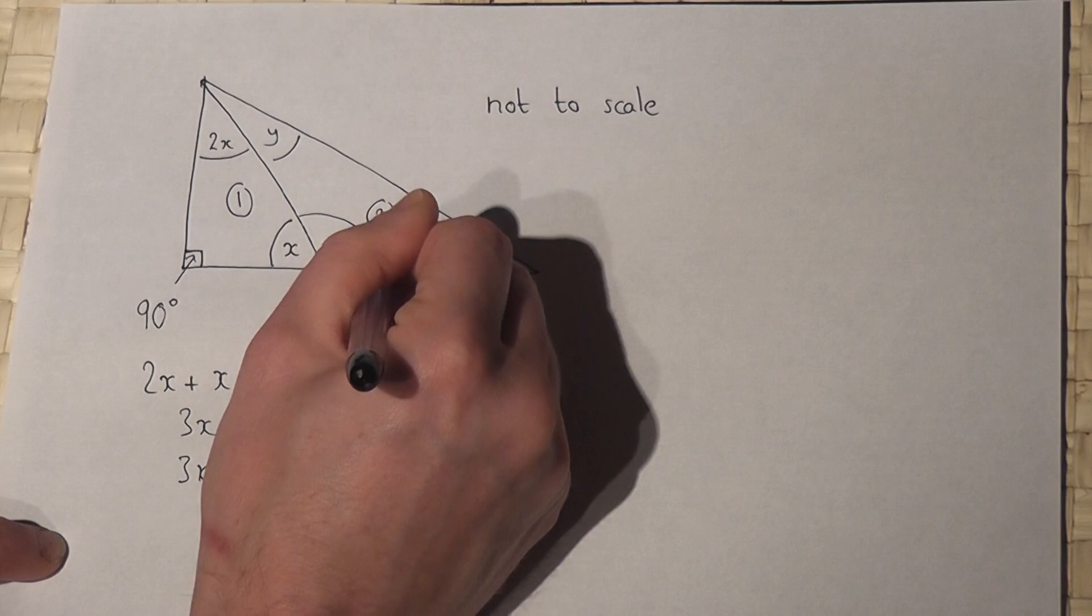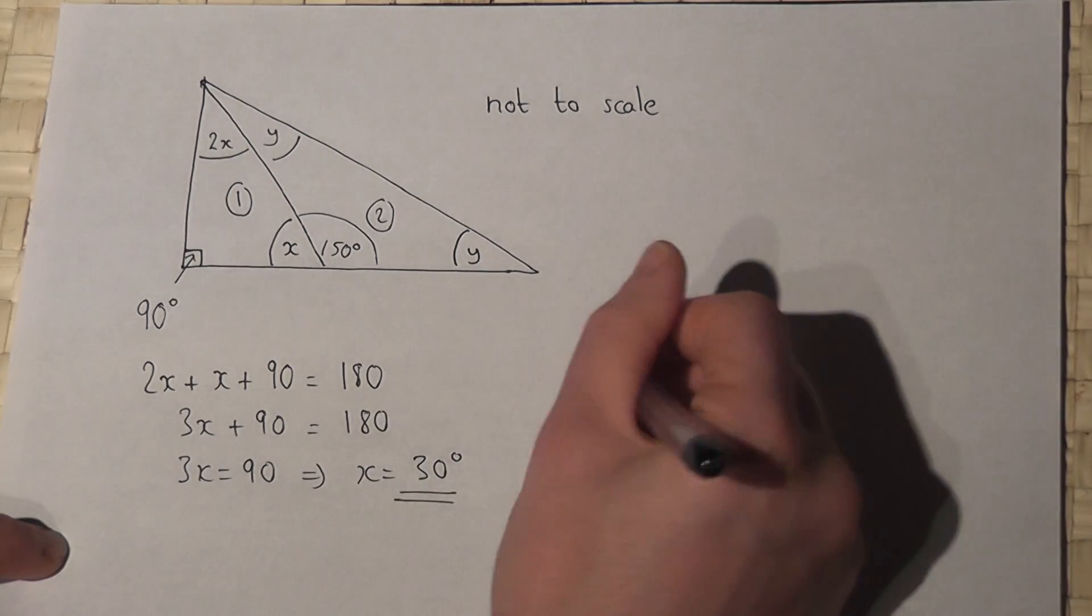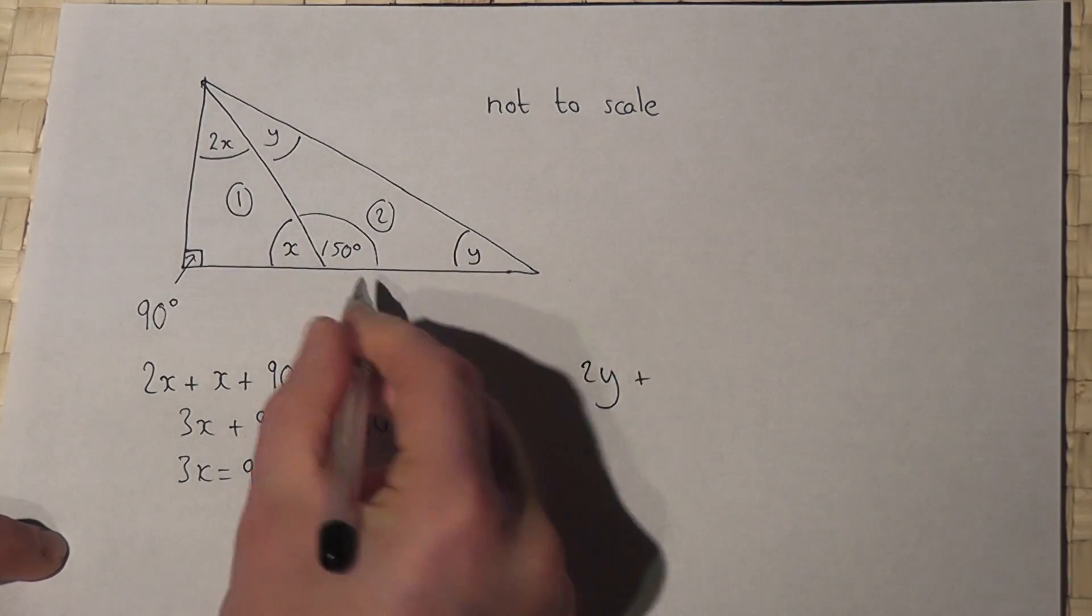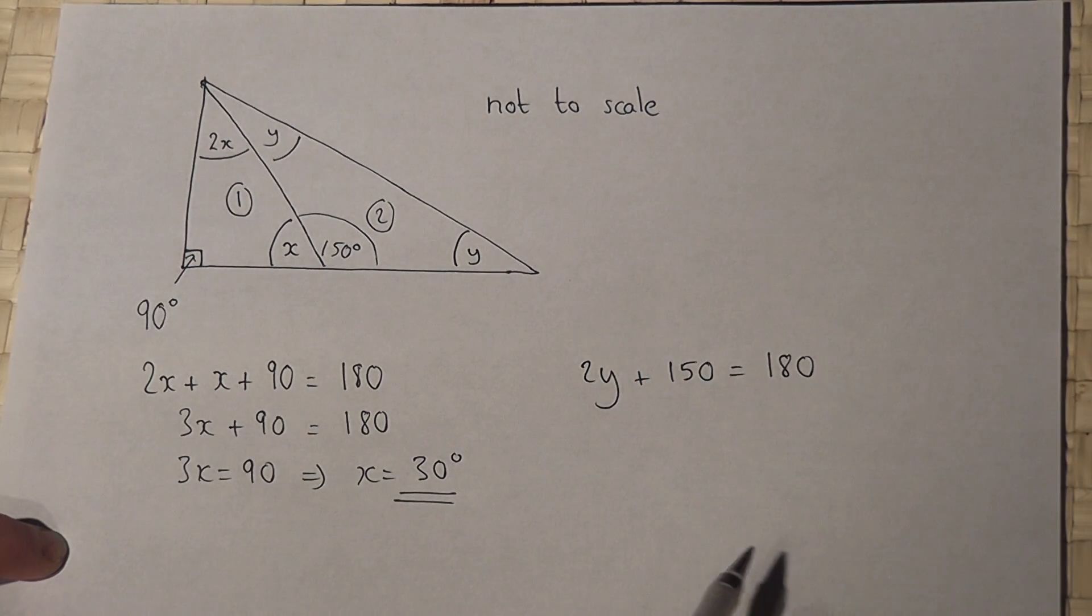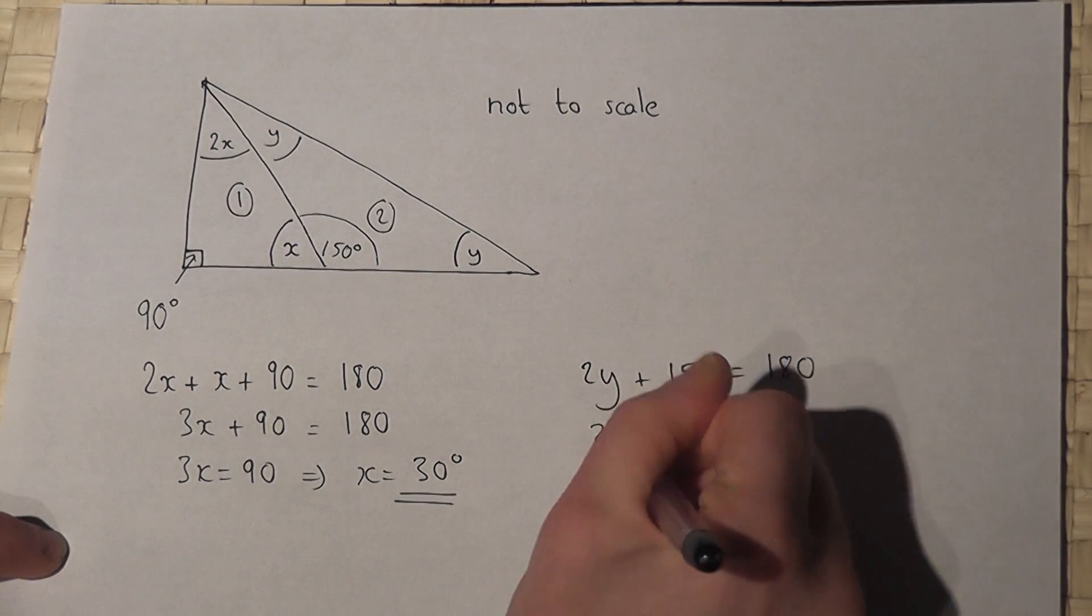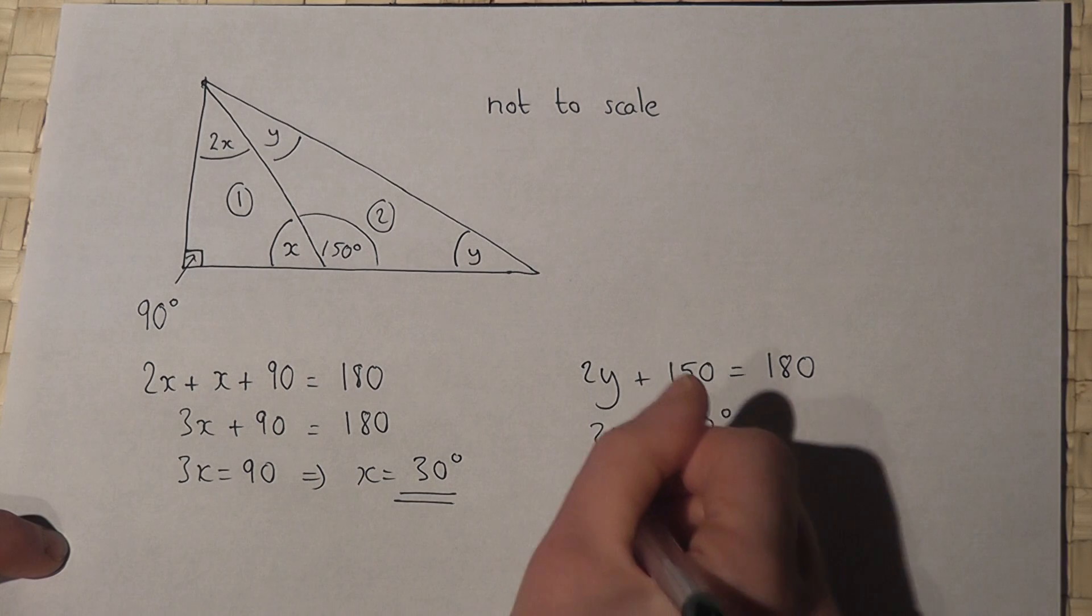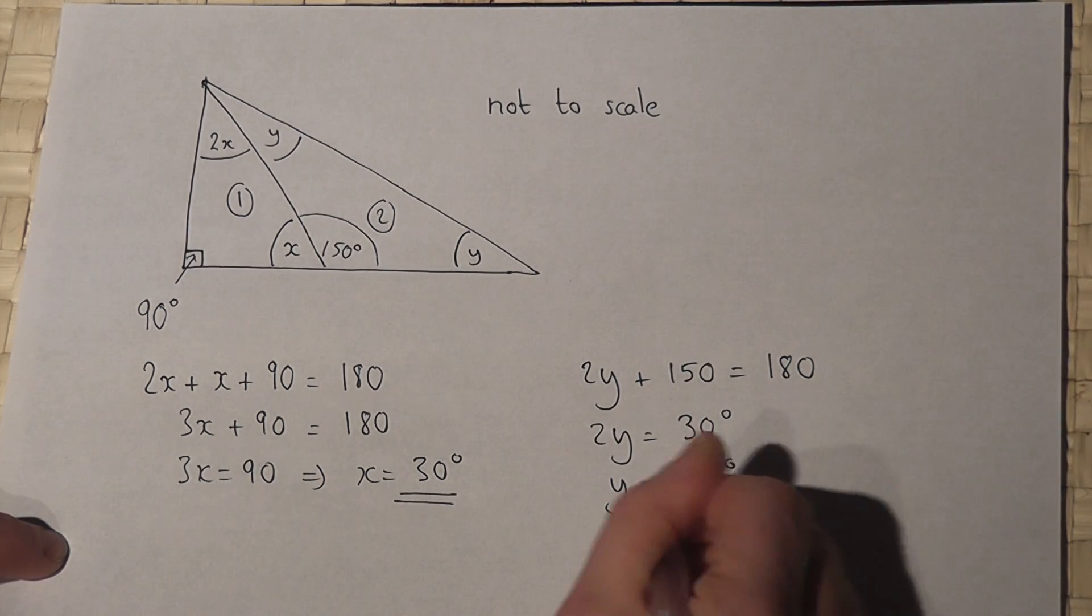So to find y, y plus y, which is 2y plus 150, must equal 180. So 2y must equal 30 degrees. To find y, I divide by 2, so y equals 15 degrees.